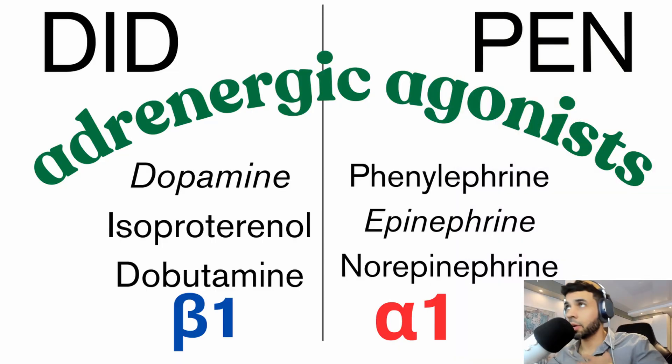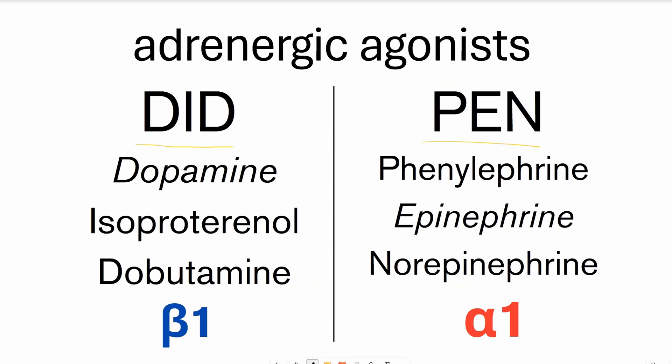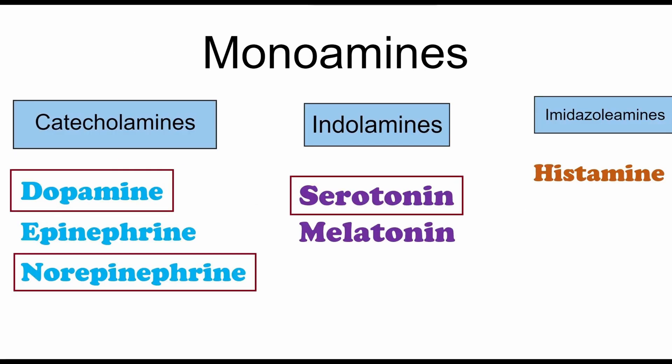So let's look at this mnemonic for adrenergic agonist. So did pen. So let's go over the rules we need to follow here to make this mnemonic work. Rule number one, first we identify the catecholamines. Let's remember.